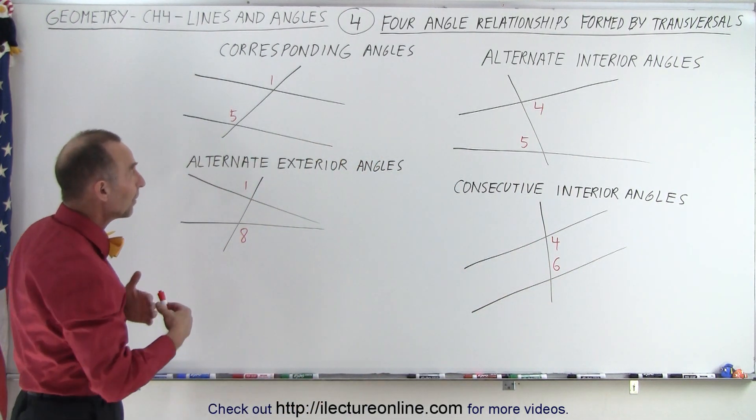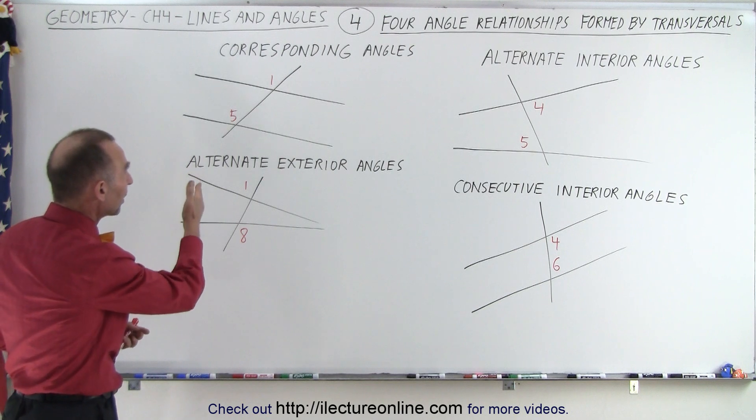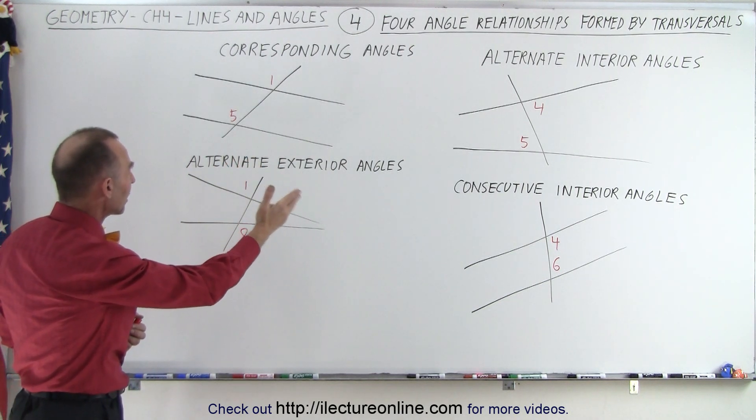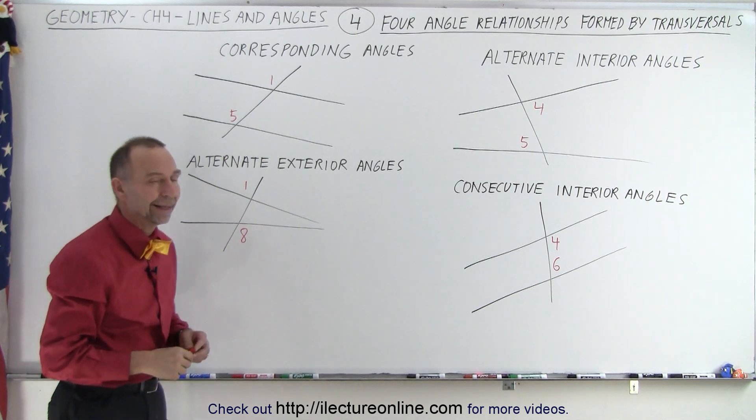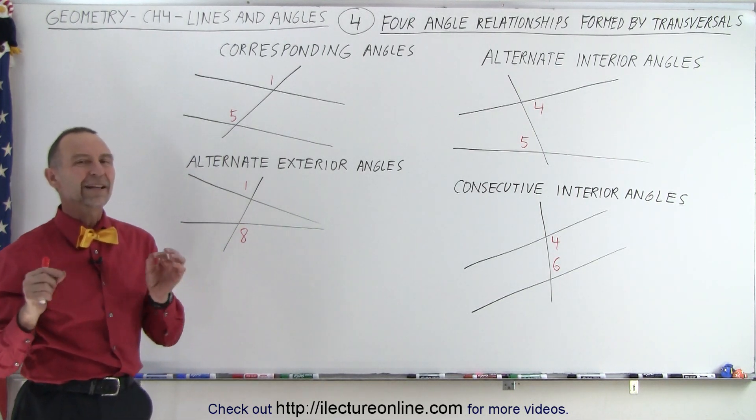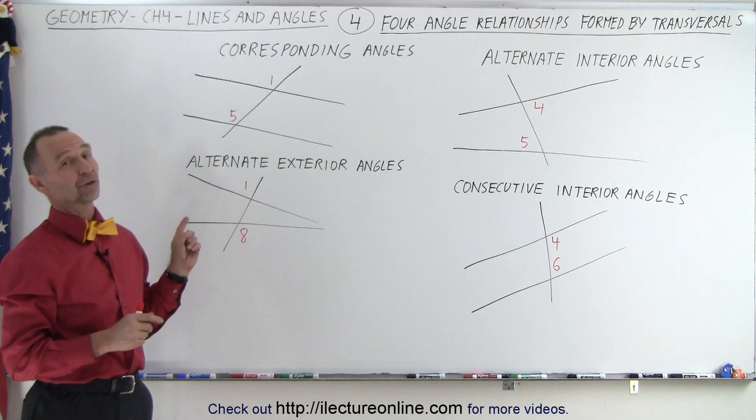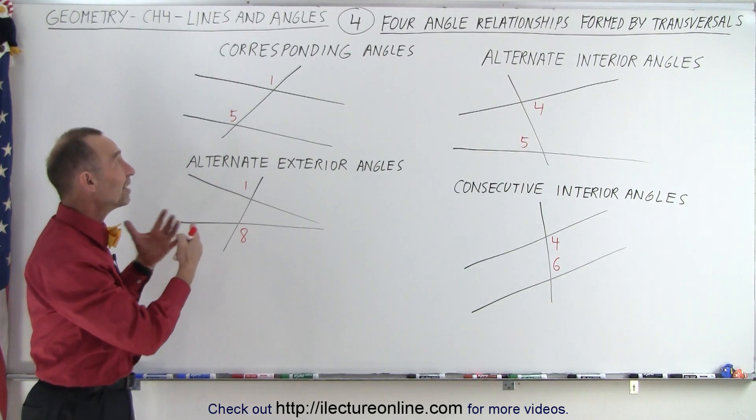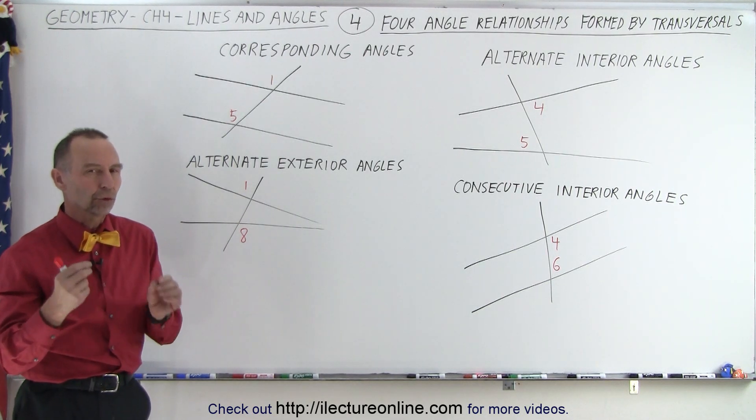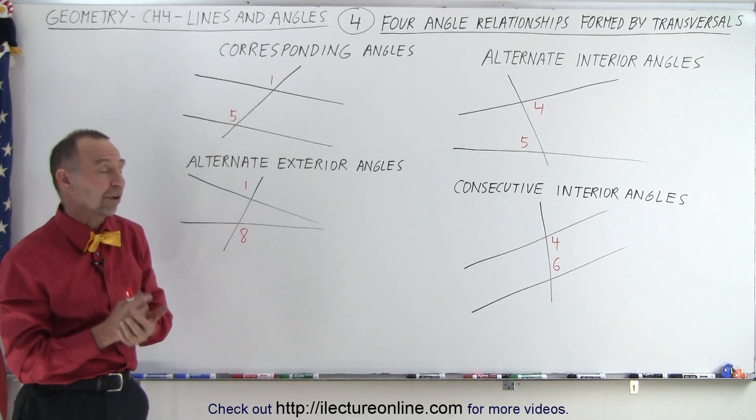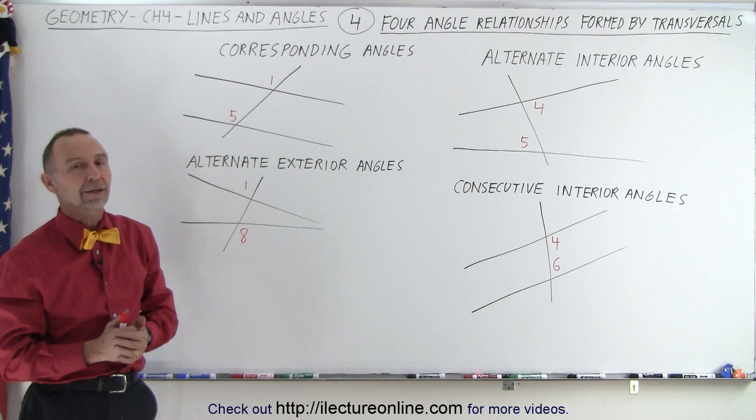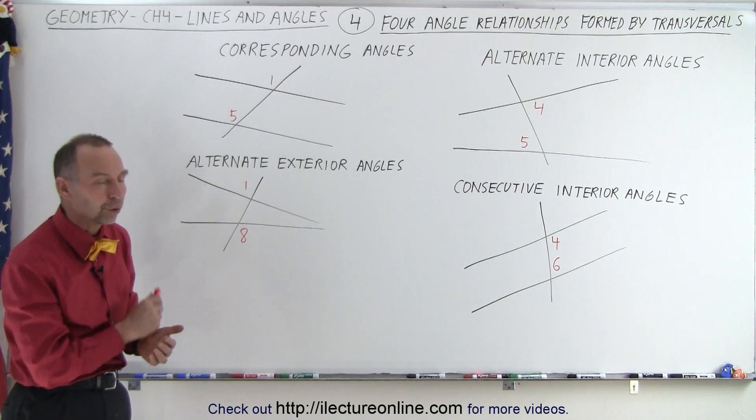So we need to understand and be able to recognize corresponding angles, alternate interior angles, alternate exterior angles, and consecutive interior angles. And now we're going to learn the special significance of those. Maybe first what we should do is figure out how many of each type there are, and then we'll learn the special significance when the two lines that the transversals cross are indeed parallel. So stay tuned and we'll show you what that looks like.